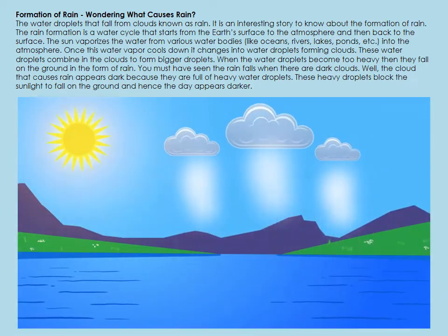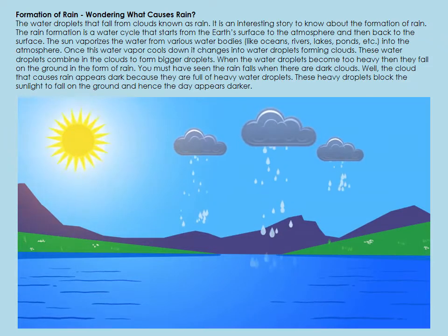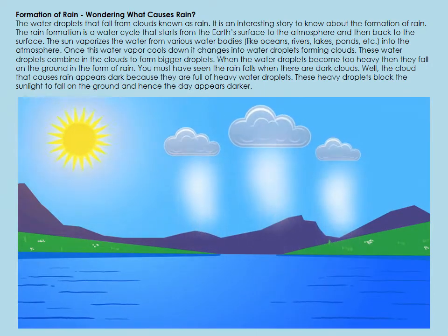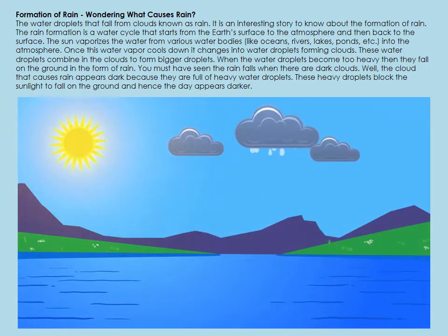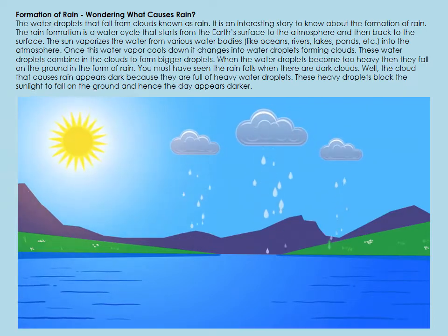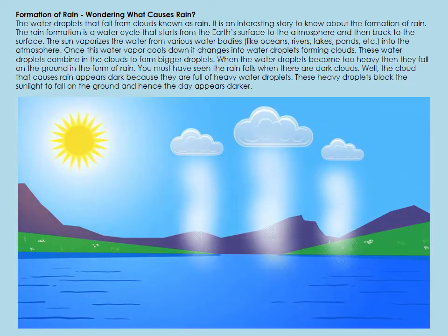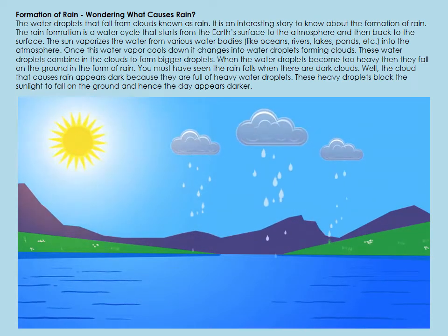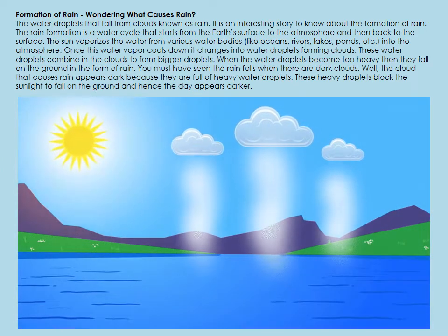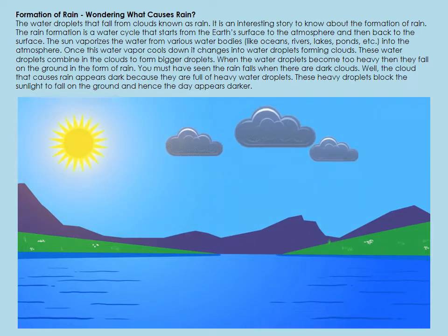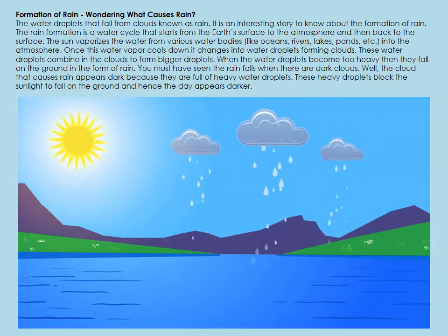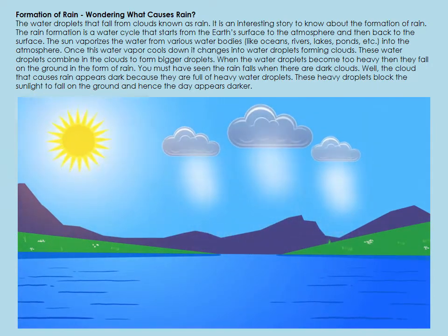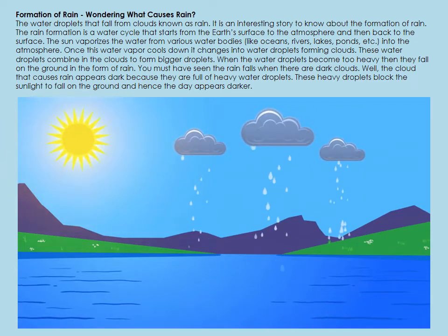The sun vaporizes the water from various bodies like oceans, rivers, lakes, ponds, etc. into the atmosphere. Once this water vapor cools down, it changes into water droplets forming clouds. These water droplets combine in the clouds to form bigger droplets, and when the water droplets become too heavy, they fall on the ground in the form of rain.